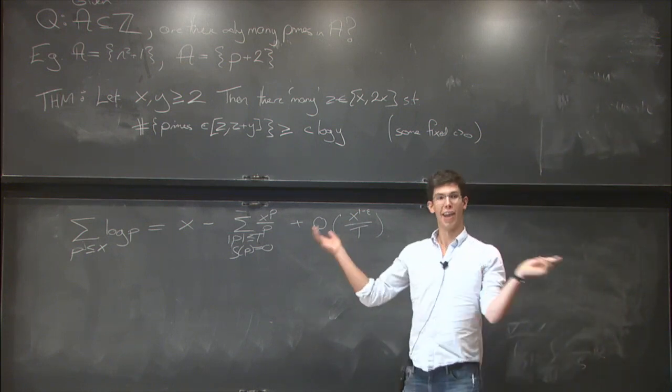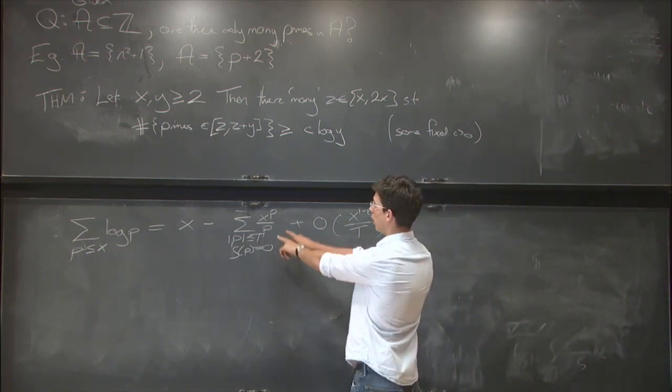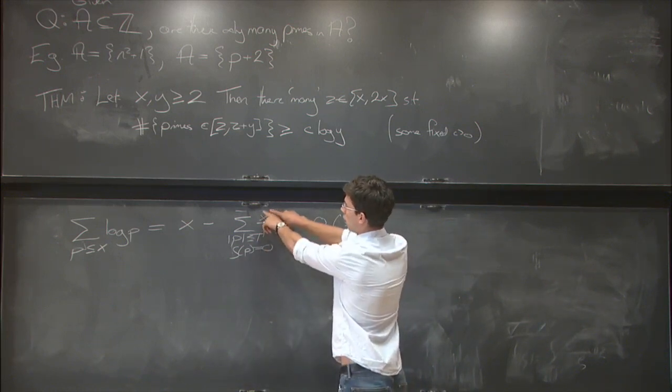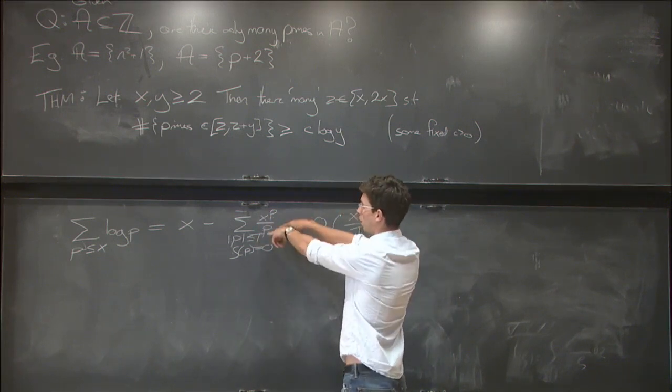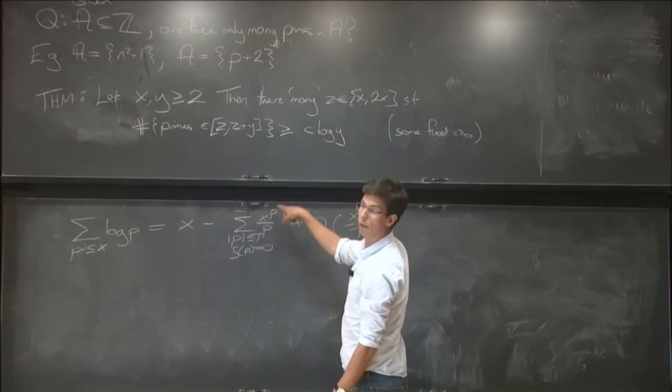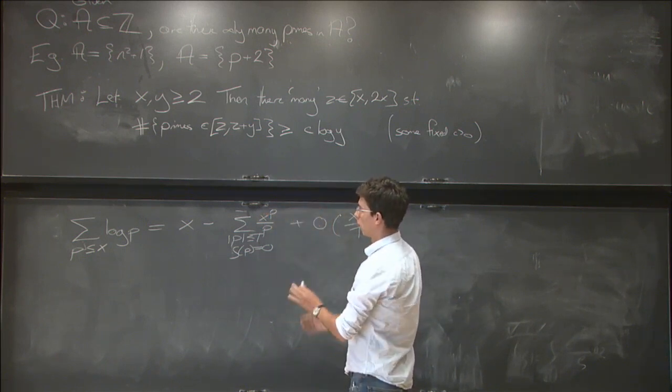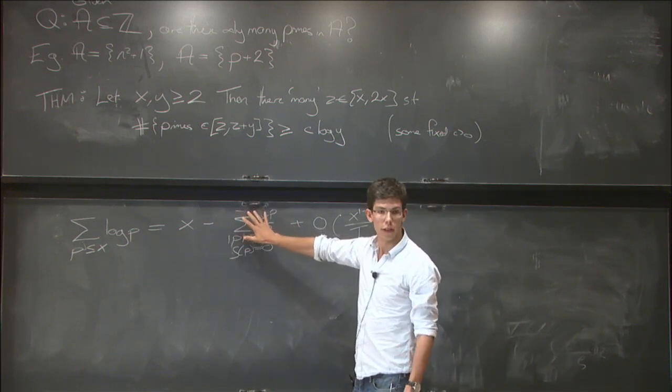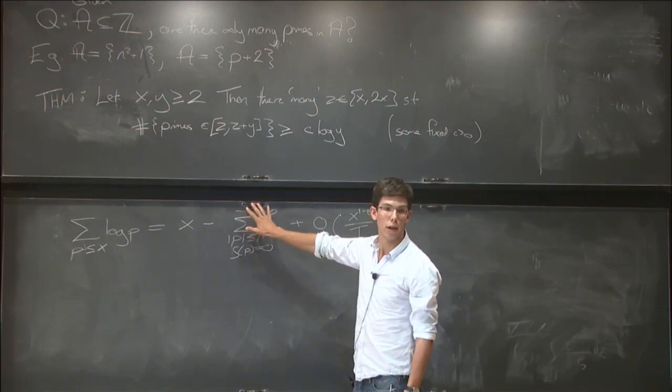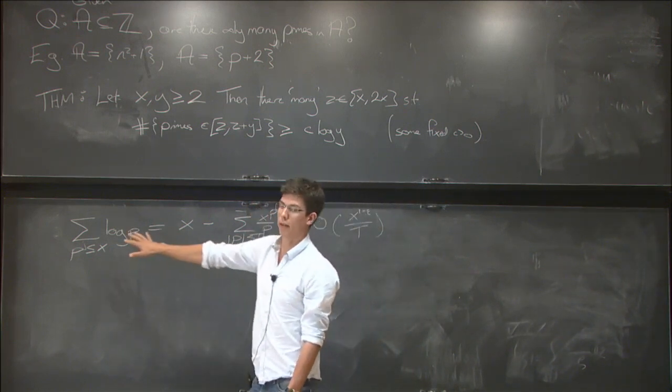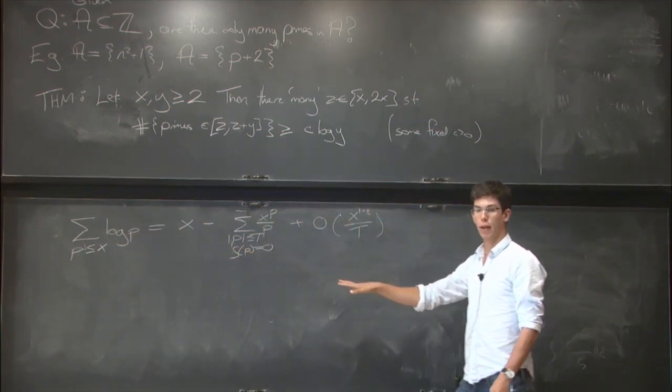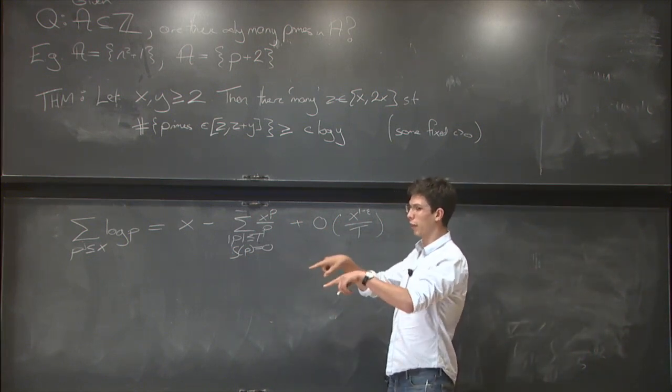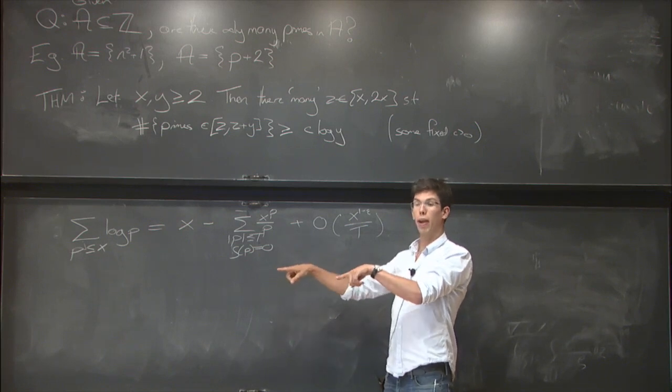And so if we knew the Riemann hypothesis, then the real part of all the zeros would be of size one half. That means that each of these individual terms here, we could just put in absolute values and they'd be of size roughly x to the half. And with a few small density results on the zeros, you could just very trivially treat these terms. This would be some error term of size at most x to the half and we'd get a very good approximation to the counting function of primes.